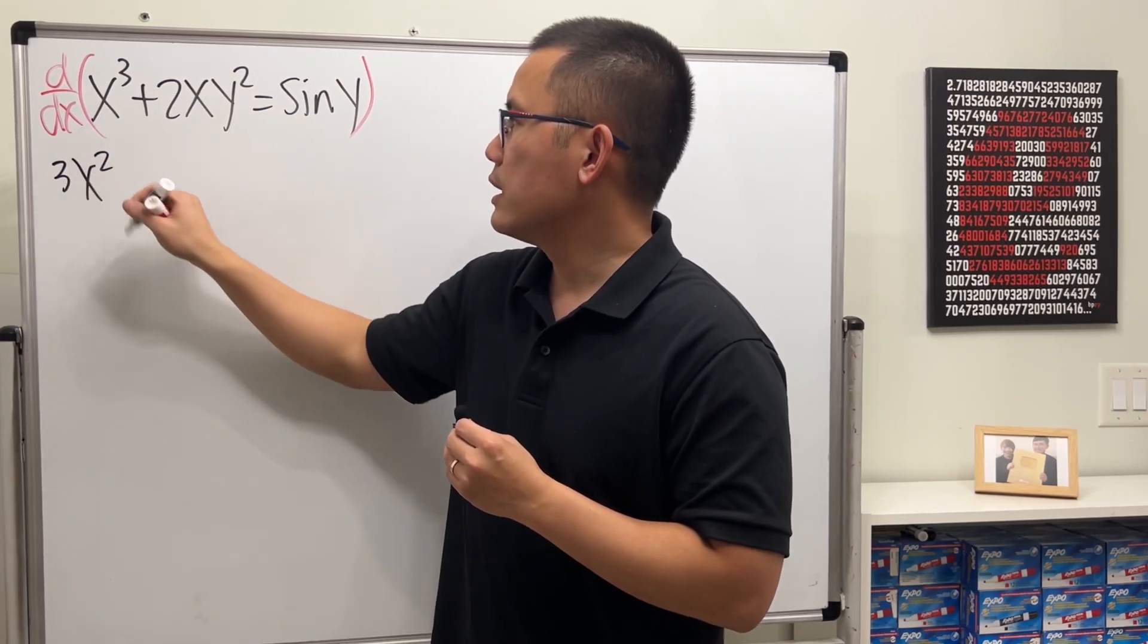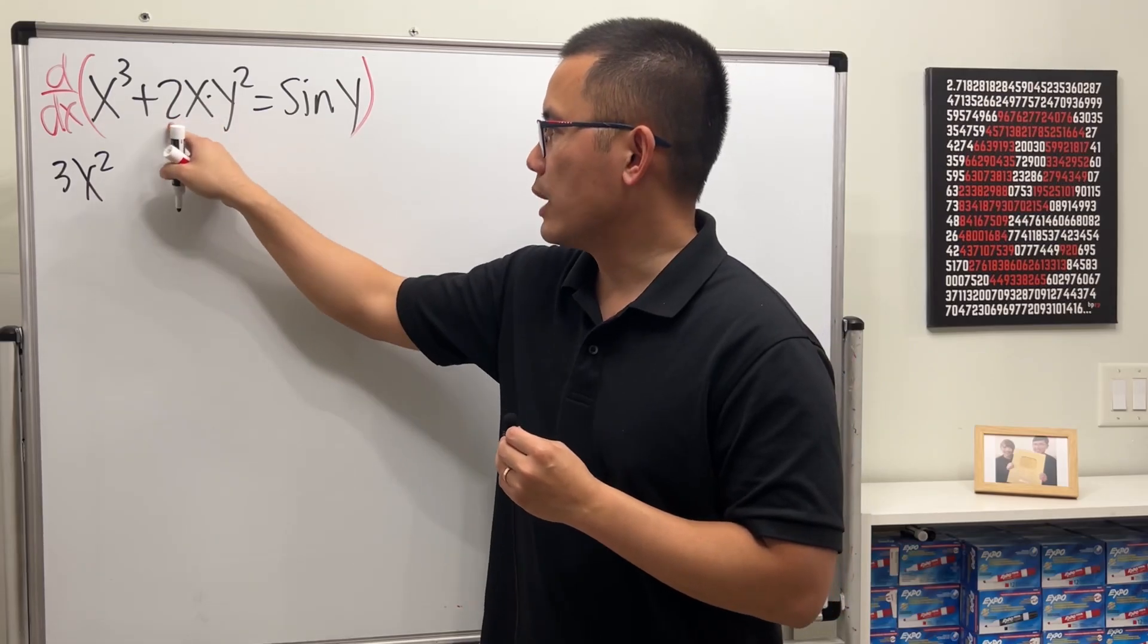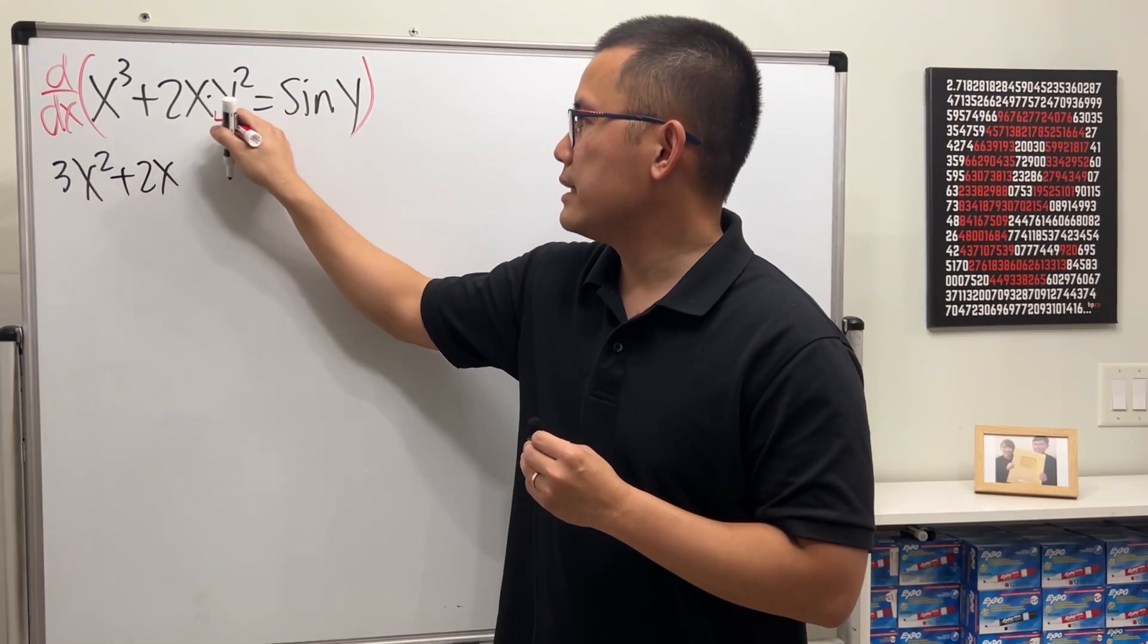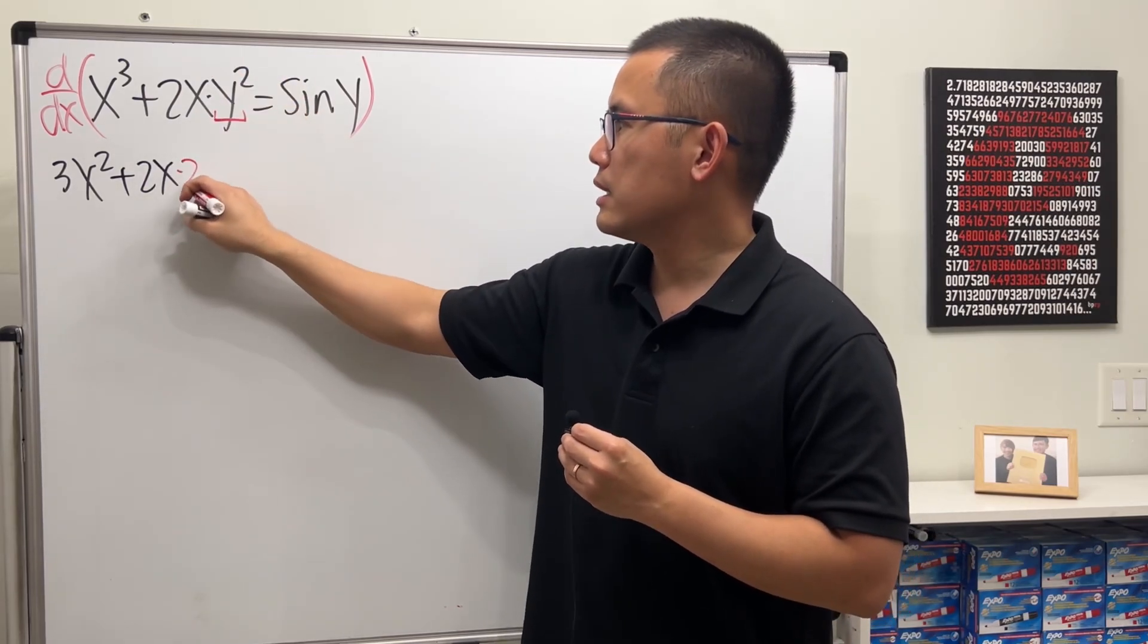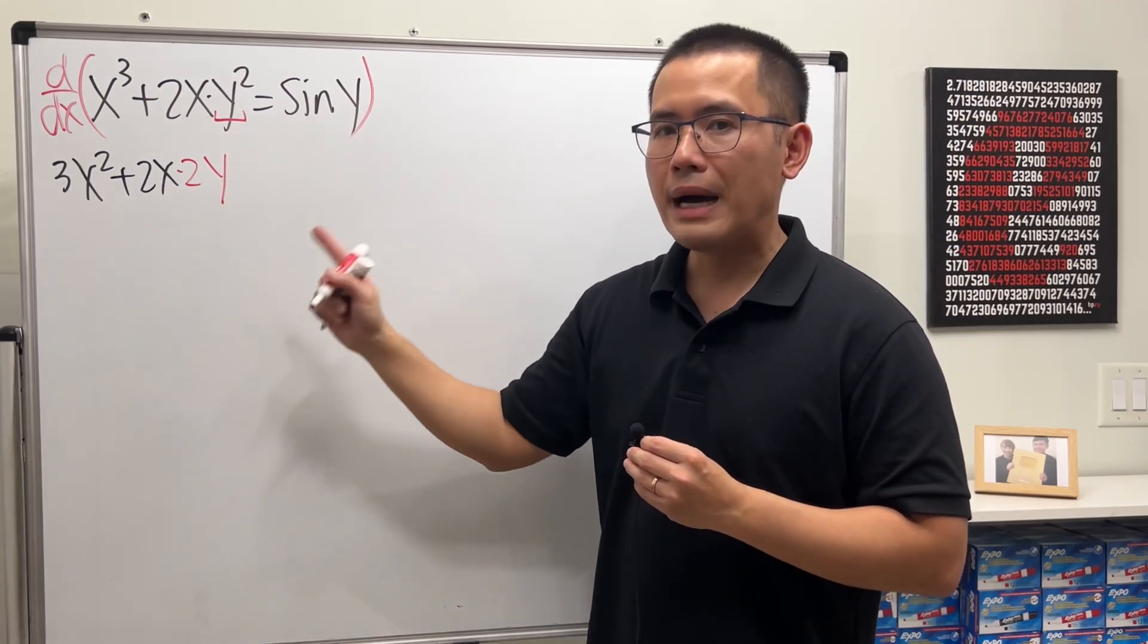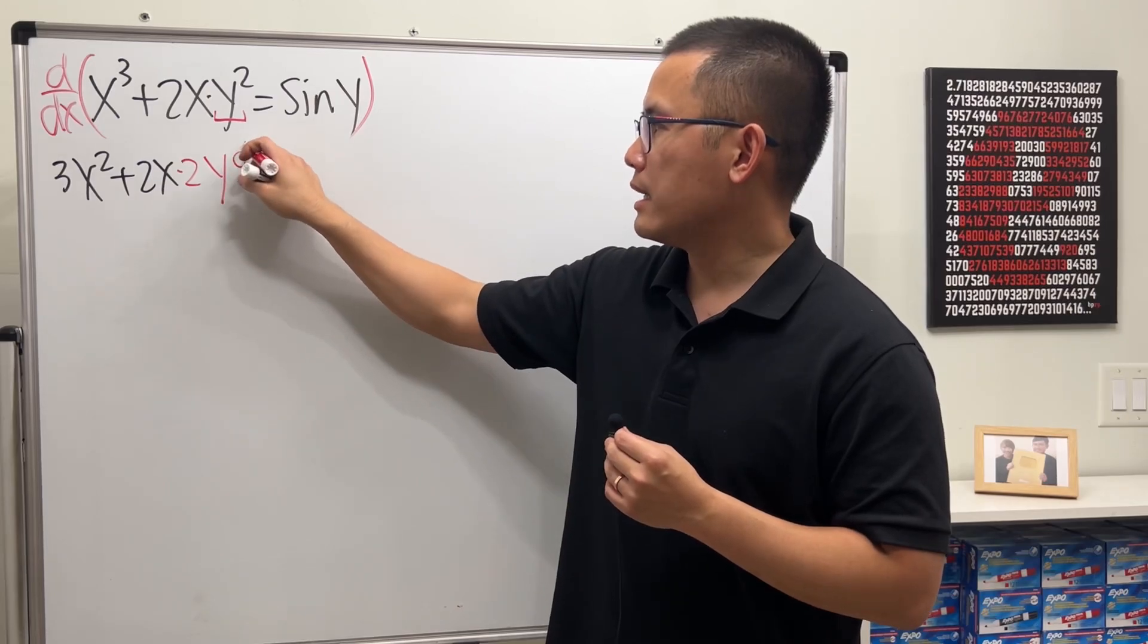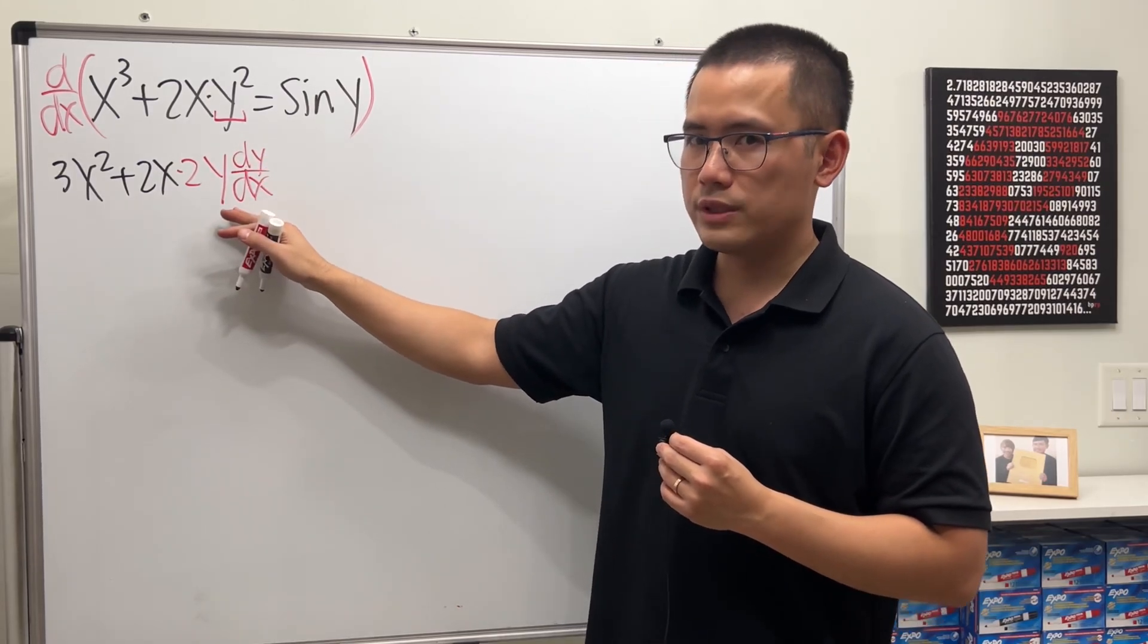And right here, we will have to use the Product rule. So I will keep 2x as the first function, and then multiply by the derivative of the second, derivative of y squared, put the 2 to the front, and then subtract 1, 2y to the first power, but y is a function of x. So we multiply by its derivative, which is dy/dx. So that's how we squeeze out the dy/dx.